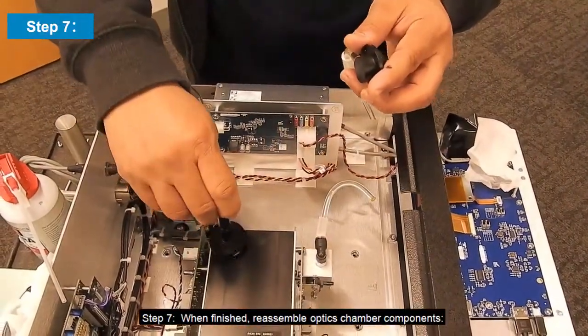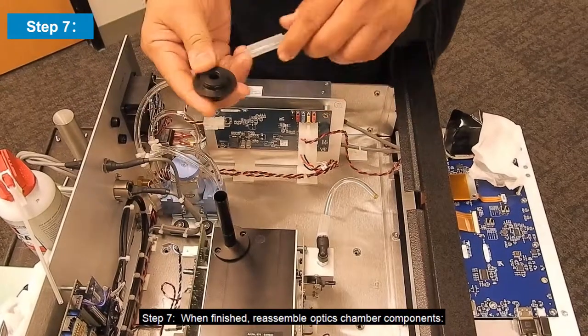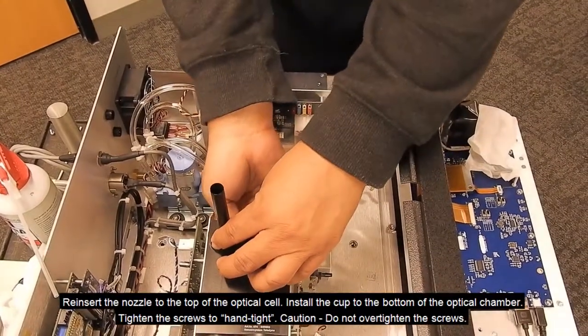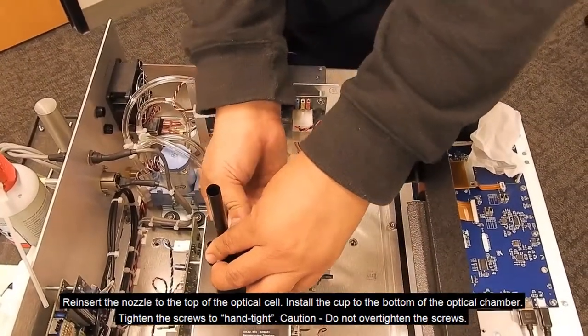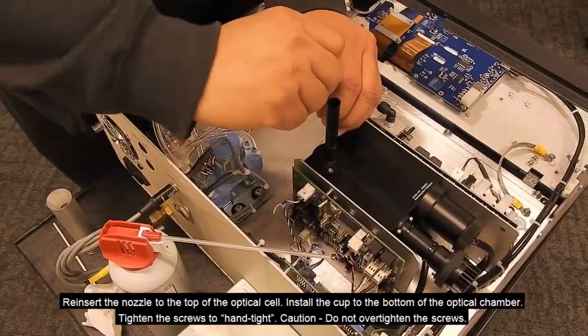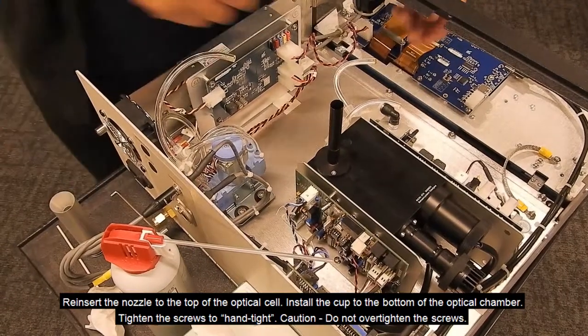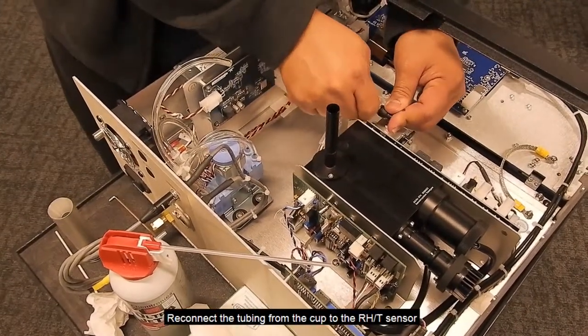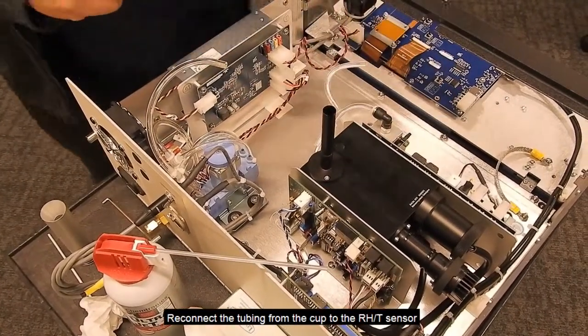Step 7: Once finished, reassemble the optics chamber components. Reinsert the nozzle to the top of the optical cell and install the cup in the bottom of the optical chamber. Tighten the screws to hand tight. Caution: do not over tighten the screws. Reconnect the tubing from the cup to the RHT sensor.